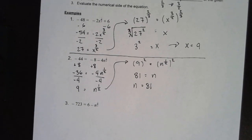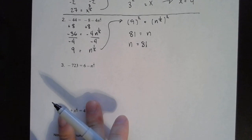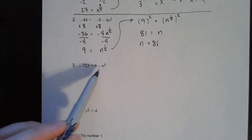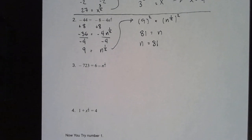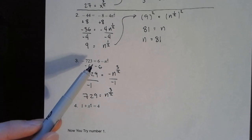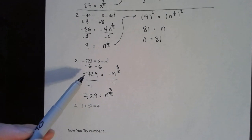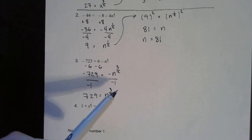Let's take a look at example number 3. We need to isolate negative n to the 3 halves. So we need to subtract 6 to the other side and divide away the negative so we just have n to the 3 halves. I subtracted 6 on both sides — negative 723 minus 6 is negative 729. Then I divided both sides by negative 1 to get rid of the negative out in front, so negative 729 divided by negative 1 is positive 729. Now we just need to get rid of this 3 halves exponent.